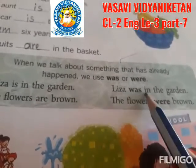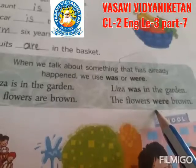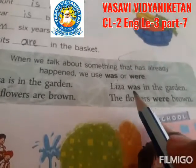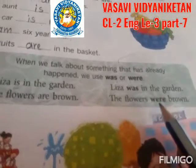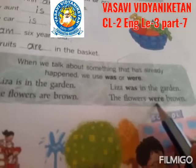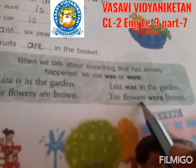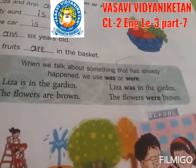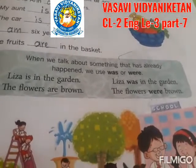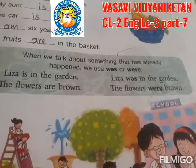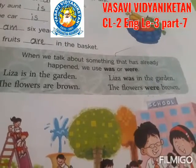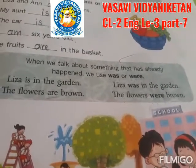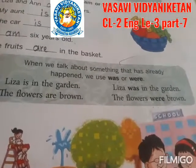'Was' — already happened. Lisa was in the garden — it already happened, so we use 'was.' 'Flowers were brown' — flowers is plural, so we use 'were.' Already happened, so we use 'was' or 'were.'